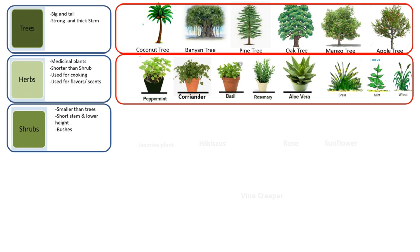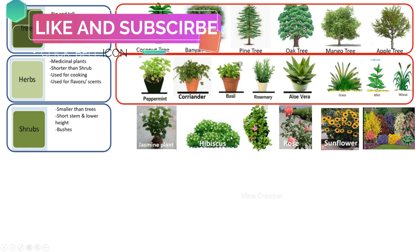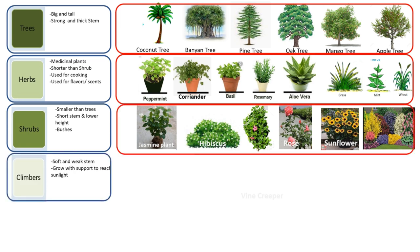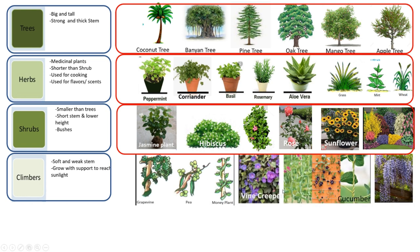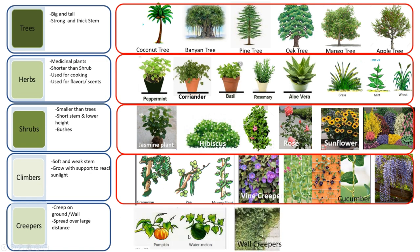Shrubs have shorter stems and lower height and grow in bushes, but are bigger than herbs. Examples include the jasmine plant, hibiscus (shoe flower plant), rose plant, and sunflower plant. Climbers have soft and weak stems and grow with support to reach sunlight — examples include grapevine, peas, money plant, and cucumber. Creepers creep on the ground or wall and spread over a large distance — examples include pumpkin and watermelon. There are also wall creepers used for decoration in houses.